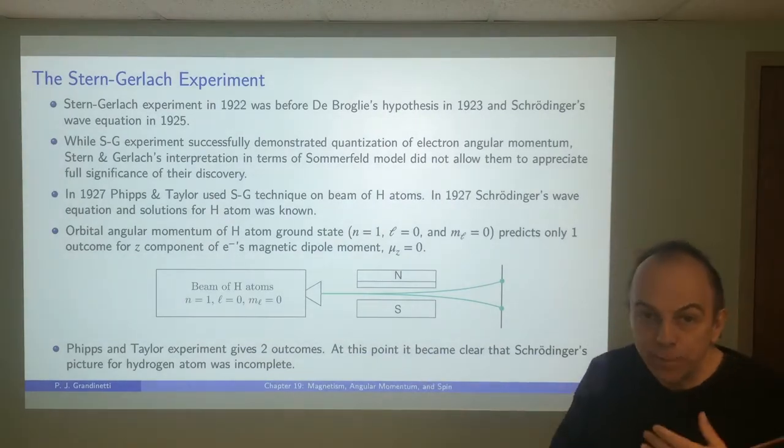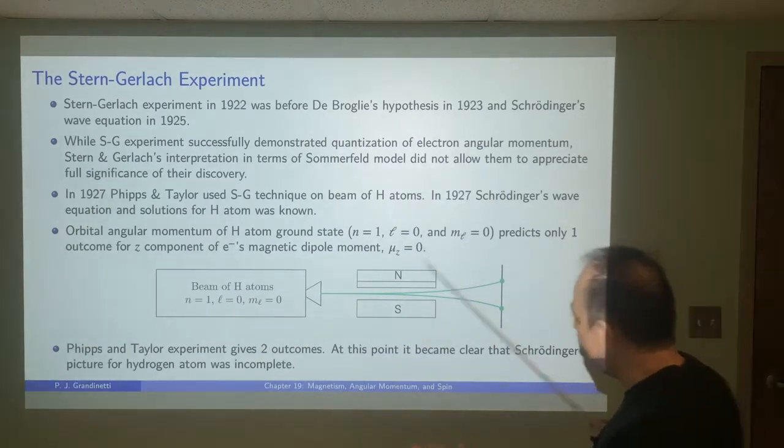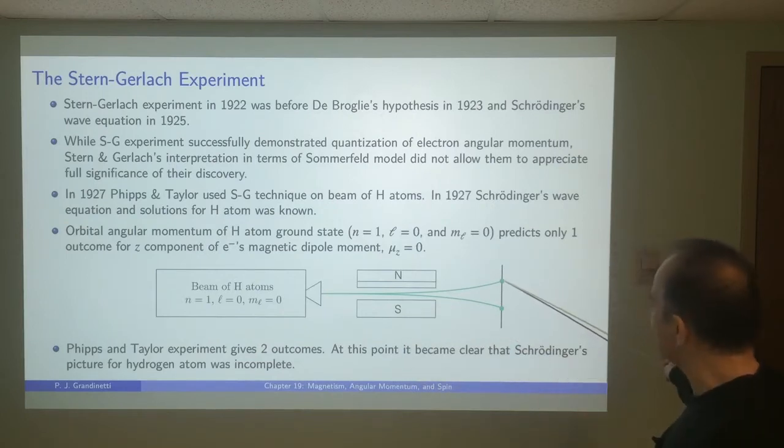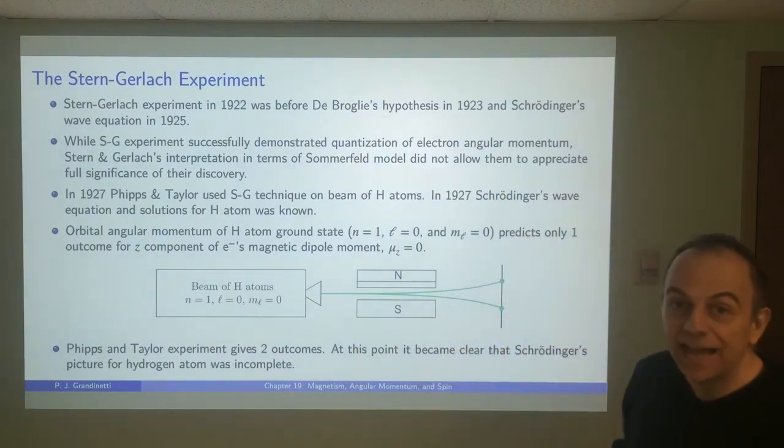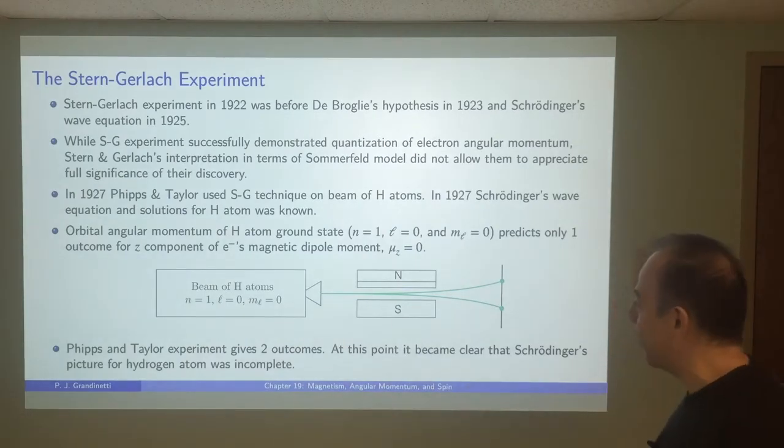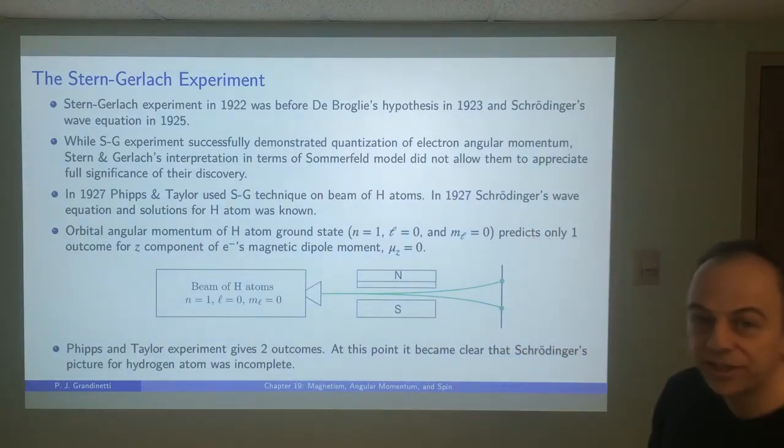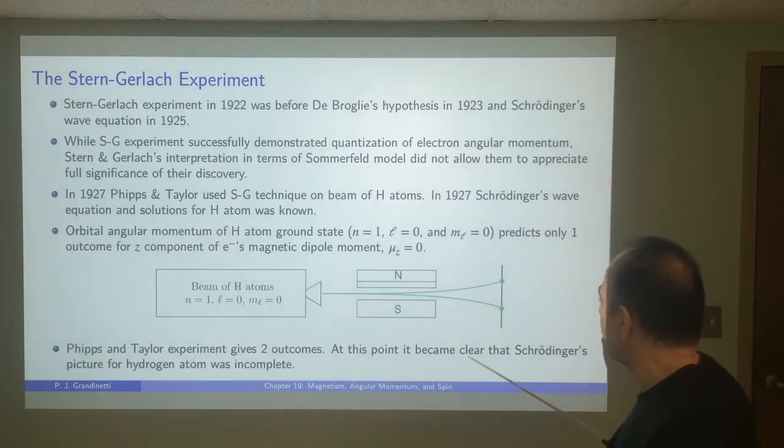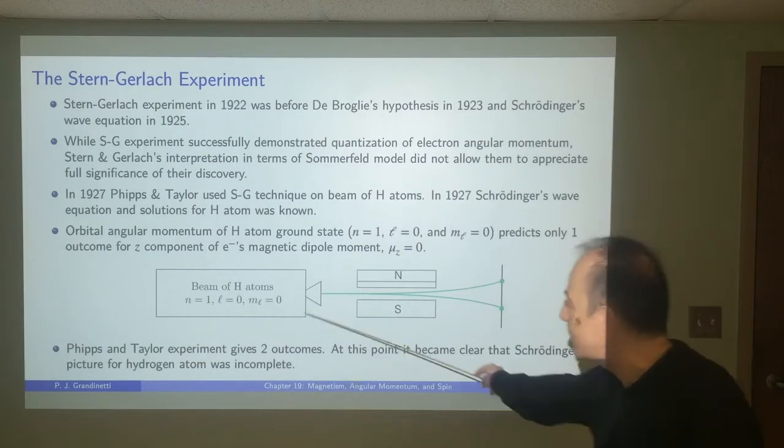They knew that there was no angular momentum for the electron in this ground state. So because there was no angular momentum, there should be no magnetic dipole moment. When they passed this beam of hydrogen atoms through the Stern-Gerlach apparatus, they actually saw the beam split into two discrete outcomes, up and down, even though the hydrogen atoms they were using were ground state hydrogen atoms. According to Schrodinger's picture, there should be no angular momentum and no magnetic dipole moment. It was at this point that it was clear that Schrodinger's picture for the hydrogen atom was really not complete.